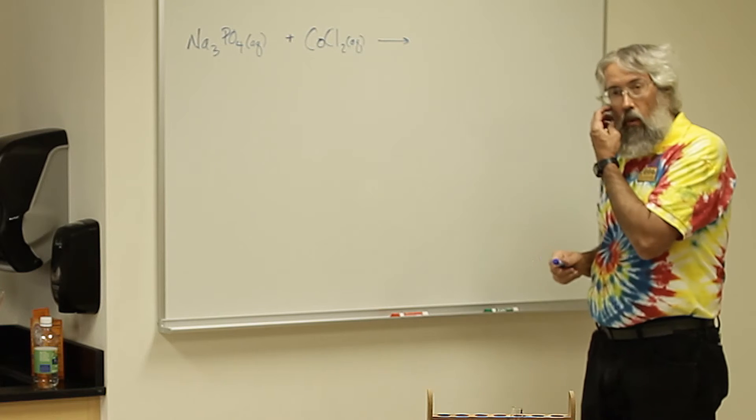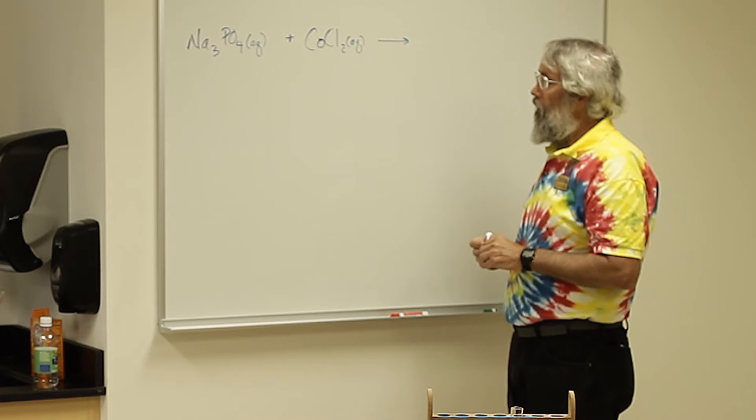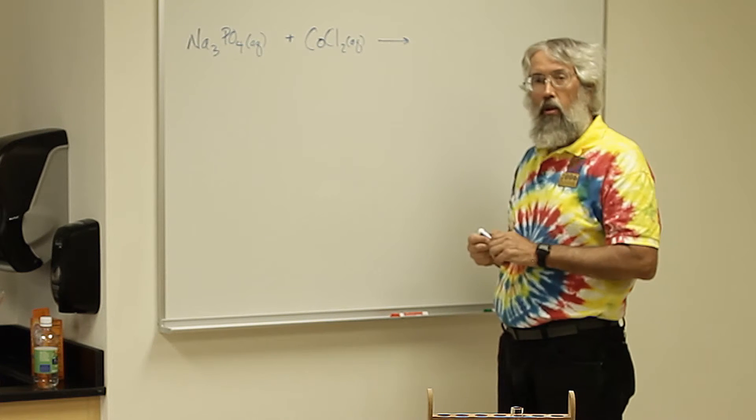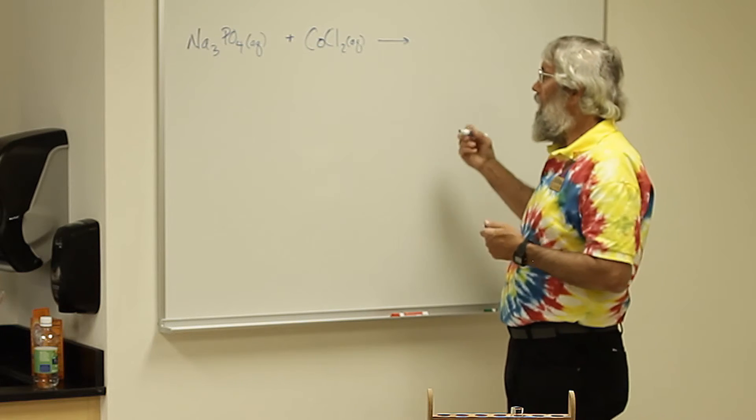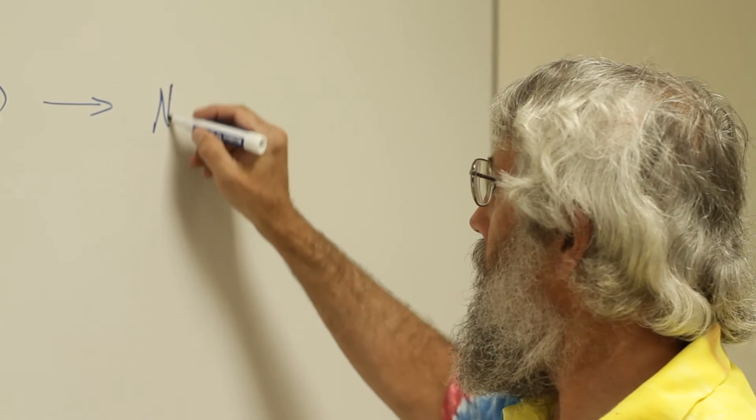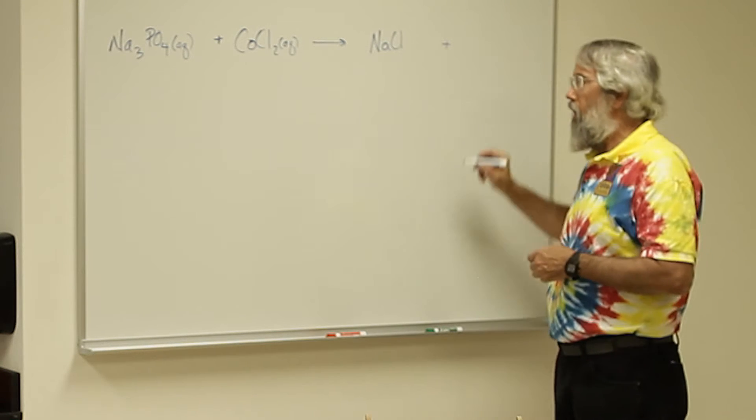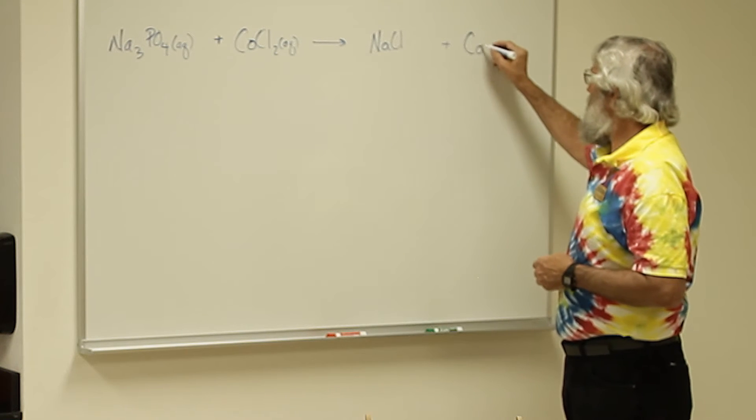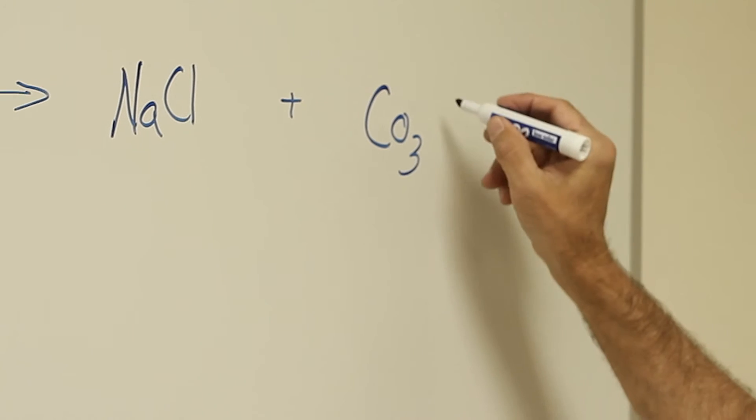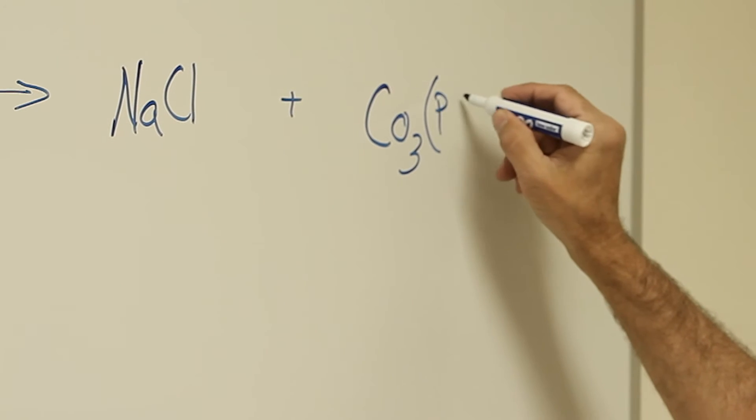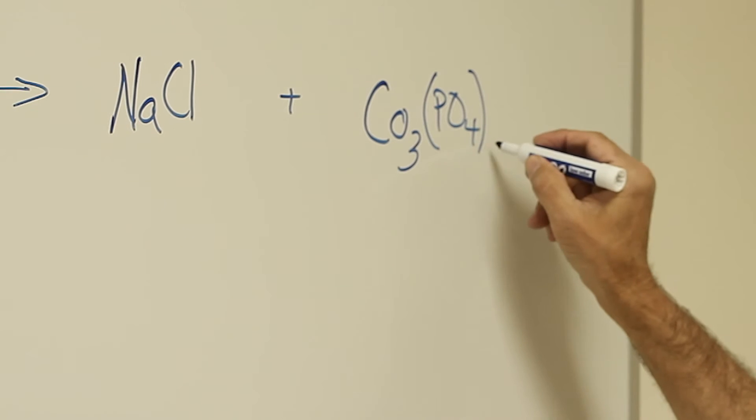We have to know what the formula is, and the formula for sodium chloride or table salt is NaCl, and the formula for cobalt phosphate is Co3(PO4)2.